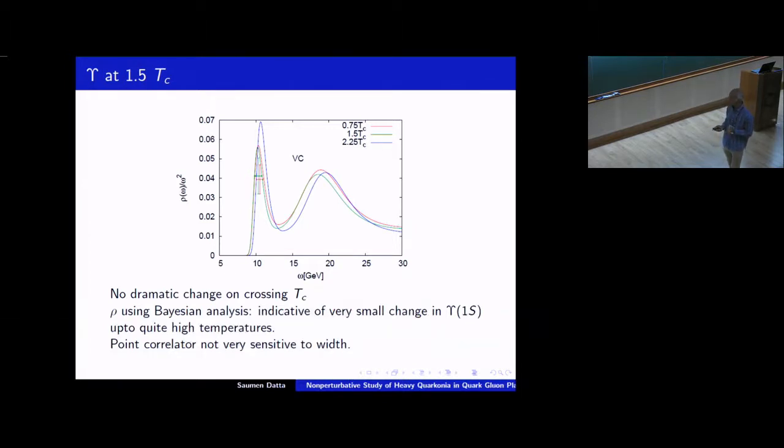Now, so this indicates that there's not a very dramatic change on crossing Tc. The shape of the spectral function roughly remains same. But some of the shortcomings of this strategy are, it's very difficult to extract width coming out of this kind of analysis. And also, the other thing that you will not notice here is that this is a vector correlation function. So you normally expect there should be a diffusive peak in the spectral function. And that doesn't show up or rather that shows up more like a delta function at the origin kind of thing from this analysis. So it's very difficult to get either the diffusive peak, width of the diffusive peak, or the width of the bottomonia from this analysis.